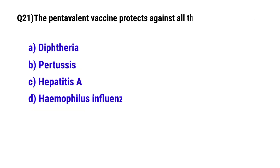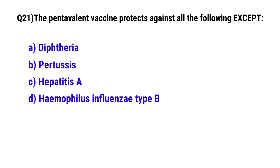Question No. 21. The pentavalent vaccine protects against all of the following except? The correct option is C. Hepatitis A.